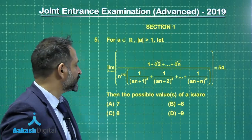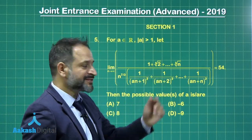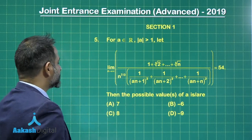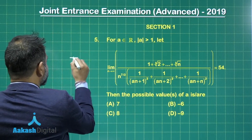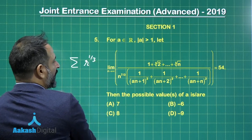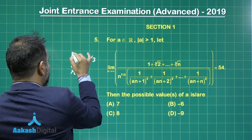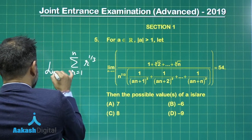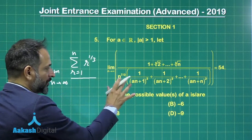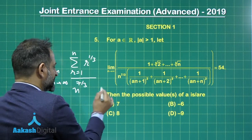Here is the next problem related to the limit as a definite integral. The number of terms are infinite — this is a series going up to infinity. If we take the general term, you can see the numerator is r raised to the power 1/3, where r is going from 1 to n and n is tending to infinity. In the denominator it is n raised to the power 7/3, and this is again a sigma.